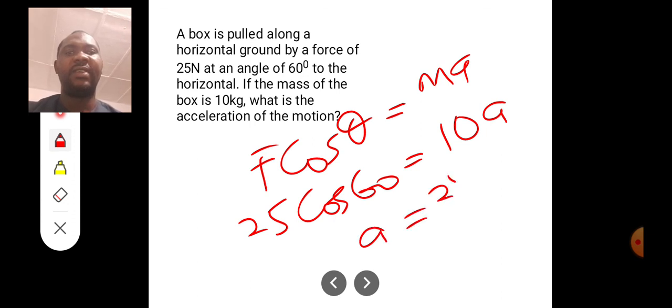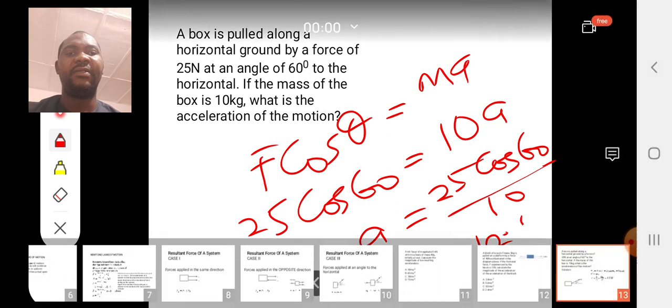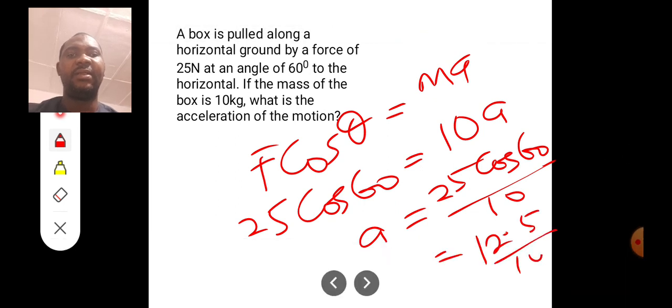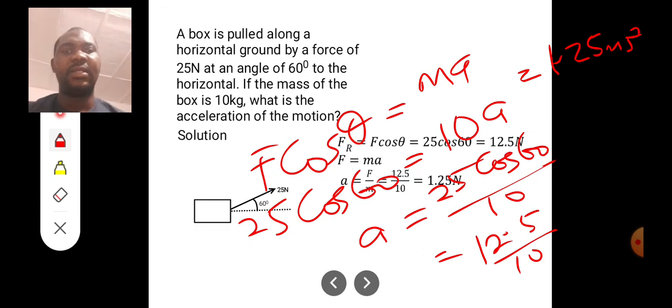My A will be equal to 25 cos 60 divided by 10. 25 cos 60 with your calculator will give us 12.5 divided by 10. So 12.5 divided by 10 is going to give us 1.25. So the answer is 1.25 meter per second squared.